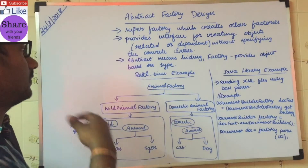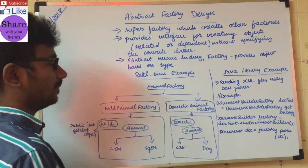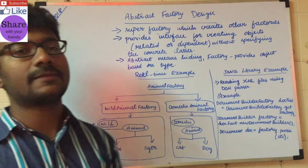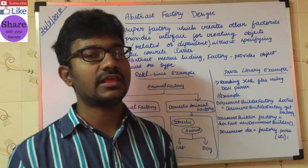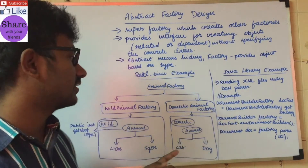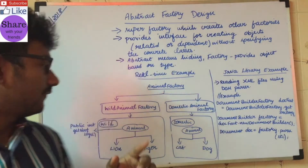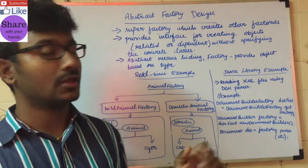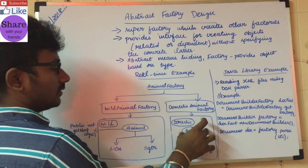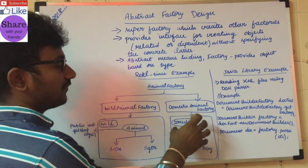Let's start with an example: Animal Factory and Wild Animal Factory. There are two types of animals — domestic animals and wild animals. Domestic animals include cat and dog; wild animals are lion and tiger. All these two categories share a super class, a super interface: the Animal interface.